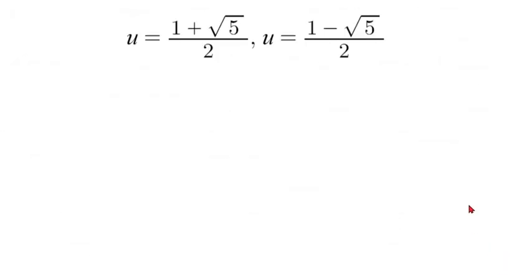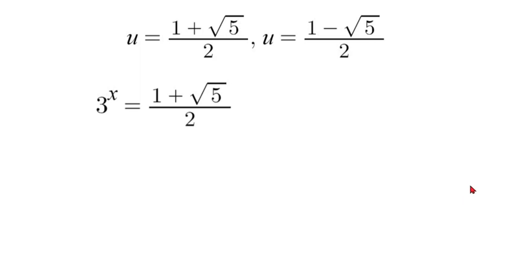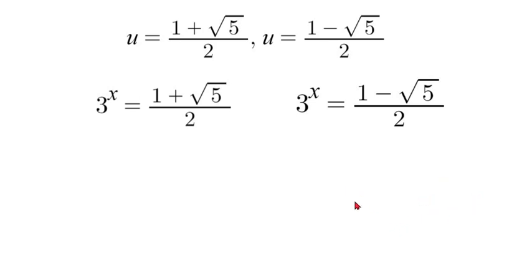Now that we have solved for u, we know that u is also equal to 3 to the power of x, which is what we originally substituted. So we have 3 to the power of x equals 1 plus square root of 5 over 2, and 3 to the power of x equals 1 minus square root of 5 over 2. Note that no value of x will make 3 to the power of x negative, and 1 minus square root of 5 is negative, so that solution is not possible — there is no real solution for that case, and it is not an option.